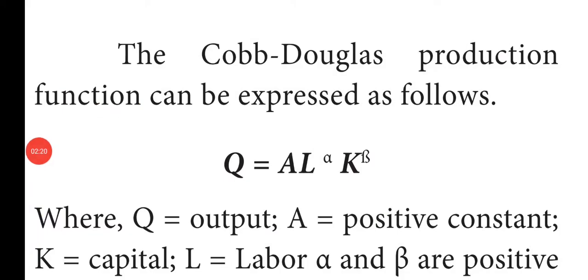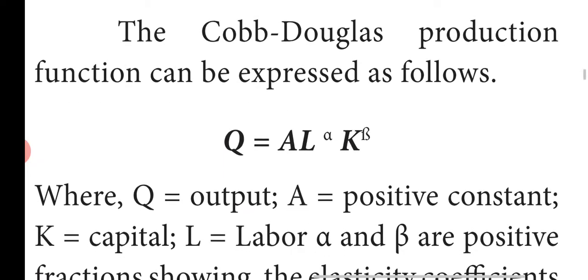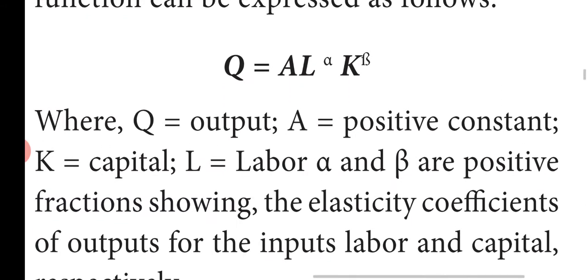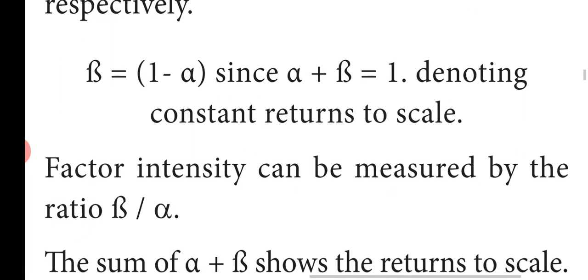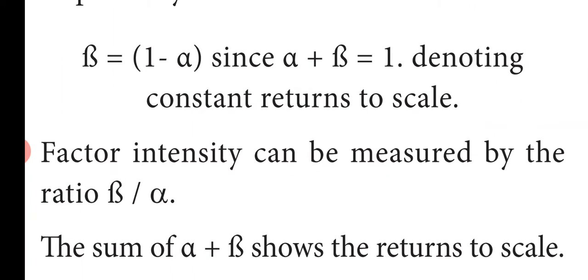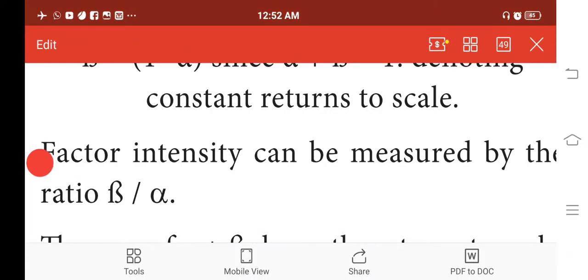The Cobb-Douglas production function can be expressed as: Q = A · L^α · K^β, where Q equals output, A equals a positive constant, K equals capital, L equals labour. Alpha and beta are positive fractions representing the elasticity coefficients of output for the inputs labour and capital respectively. Beta equals 1 minus alpha, since alpha plus beta equals 1, denoting constant return to scale.